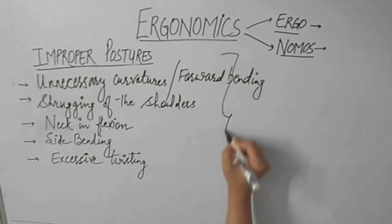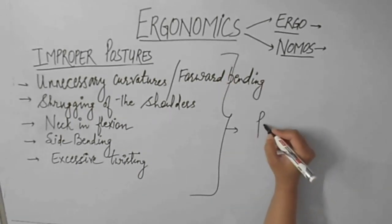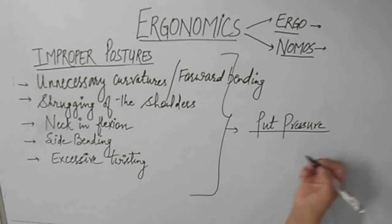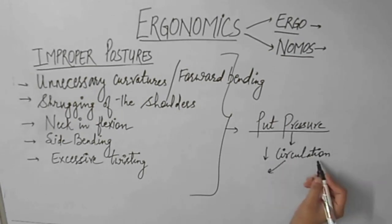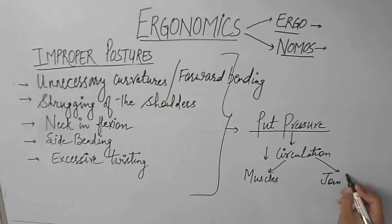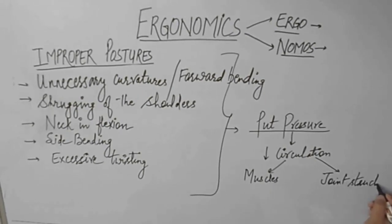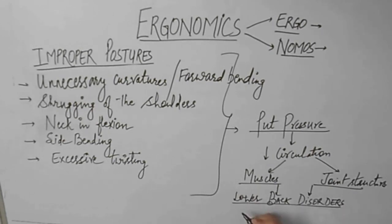All these improper postures that the dentist takes put excessive pressure on the nerves and blood vessels, which further decreases circulation, causes excessive strain on the muscles and wear and tear of the joint structures, which further results in lower back disorders that may convert into chronic lower back pain and neck and shoulder pain.